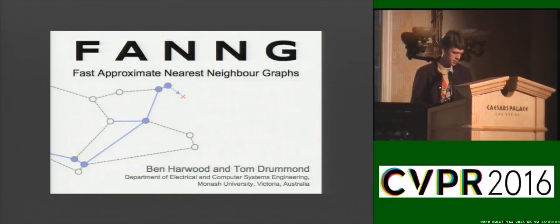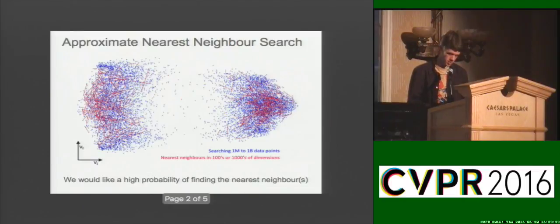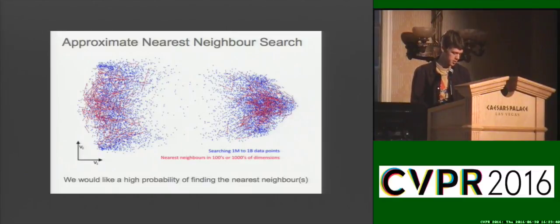Hello, I'm Ben Harwood and my PhD advisor is Tom Drummond at Monash University. I'll be presenting FAANG, Fast Approximate Nearest Neighbour Graphs. FAANG is a graph-based indexing scheme for performing efficient nearest neighbour queries on large, high-dimensional data sets of image descriptors, such as SIFT, GIST, or CNN responses.